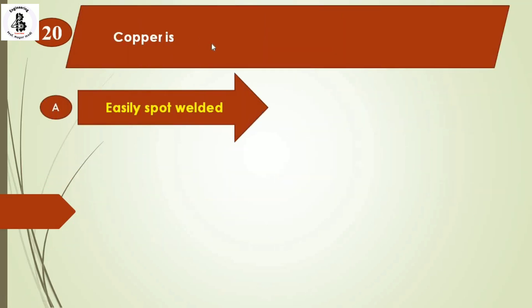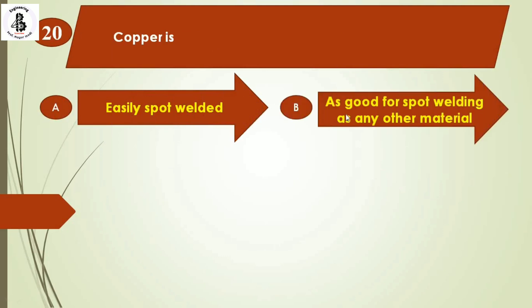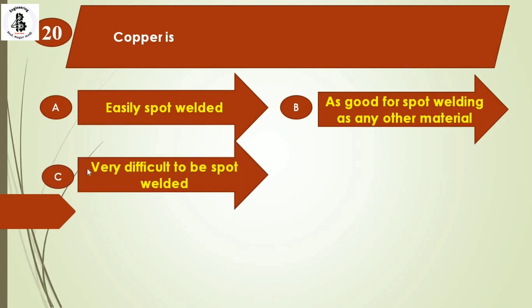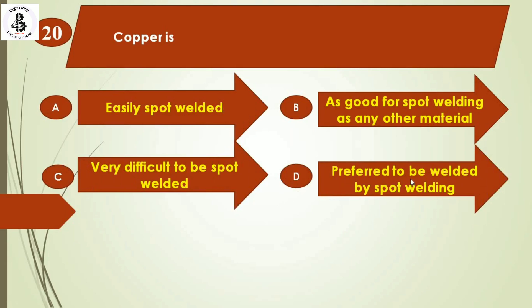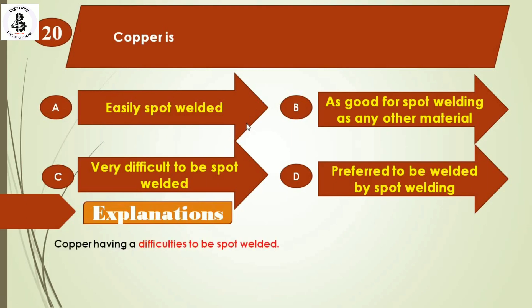The last question: copper is — Option A: easily spot welded, Option B: as good for spot welding as any other material, Option C: very difficult to spot weld, Option D: preferred to be welded by spot welding. Copper is very difficult to spot weld because in resistance welding, the electrode material is also made of copper. This creates difficulty in forming resistance to current flow. The right answer is Option C.